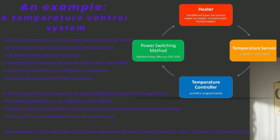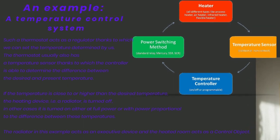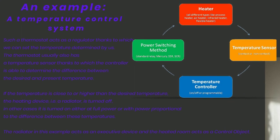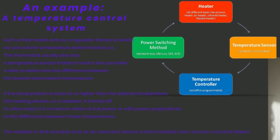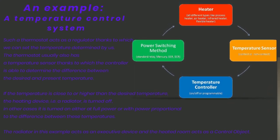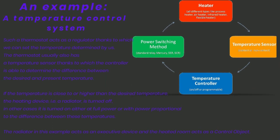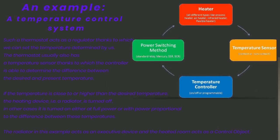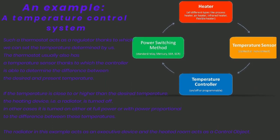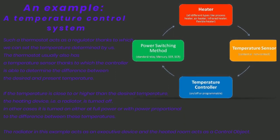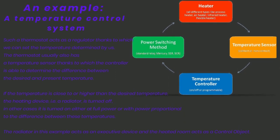The most common type of automatic thermostat is a digital electronic programmable thermostat. Such a thermostat acts as a regulator to which we can set the temperature. The thermostat usually also has a temperature sensor, which allows the controller to determine the difference between the desired and current temperature.